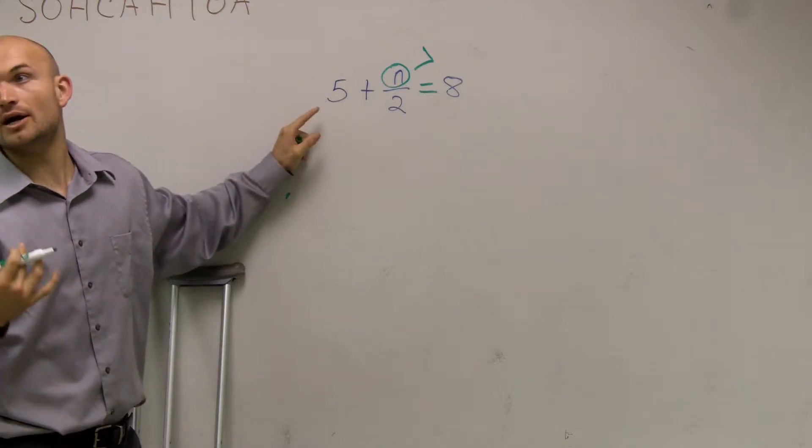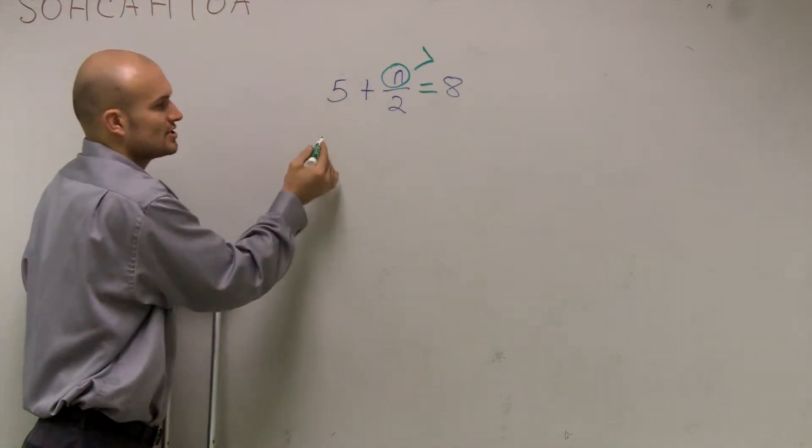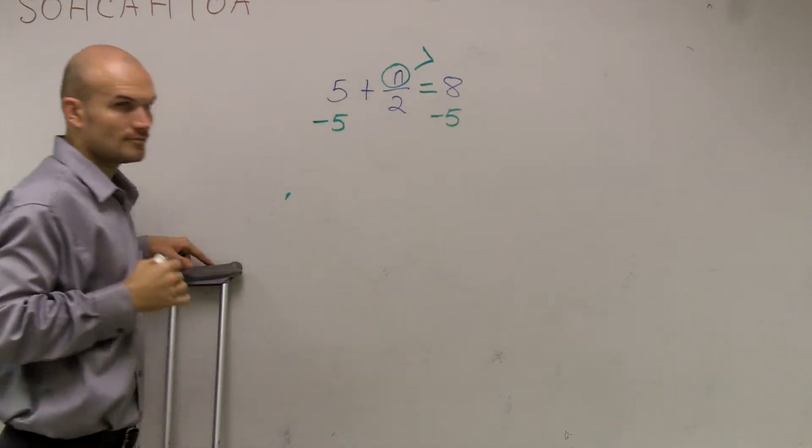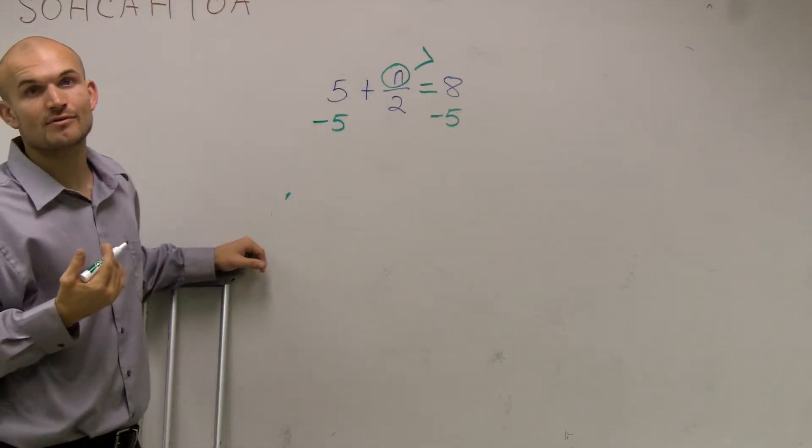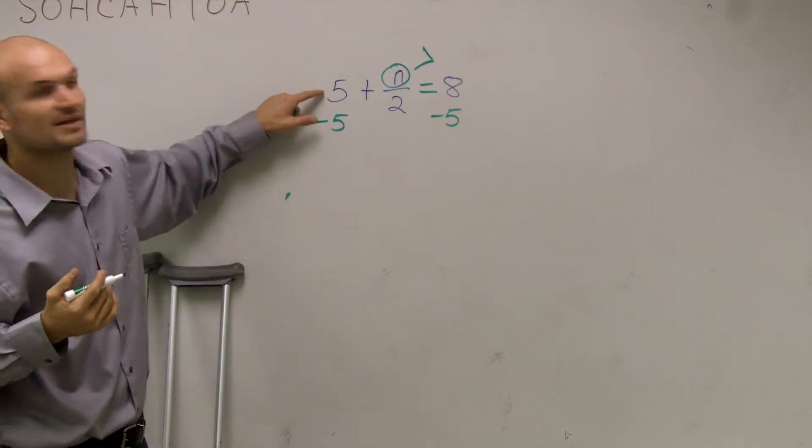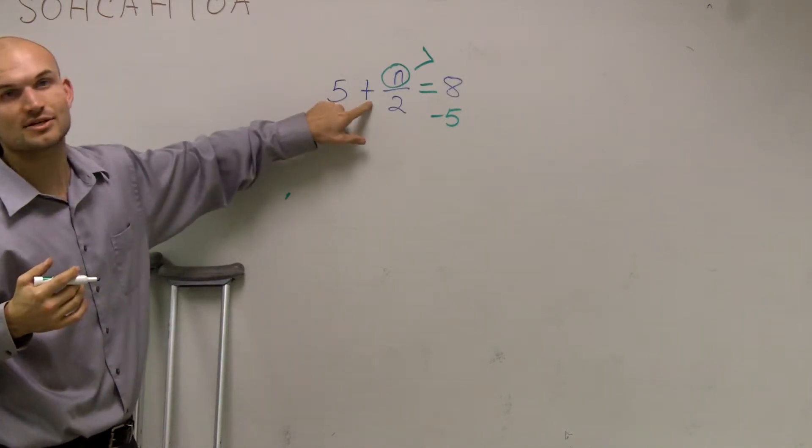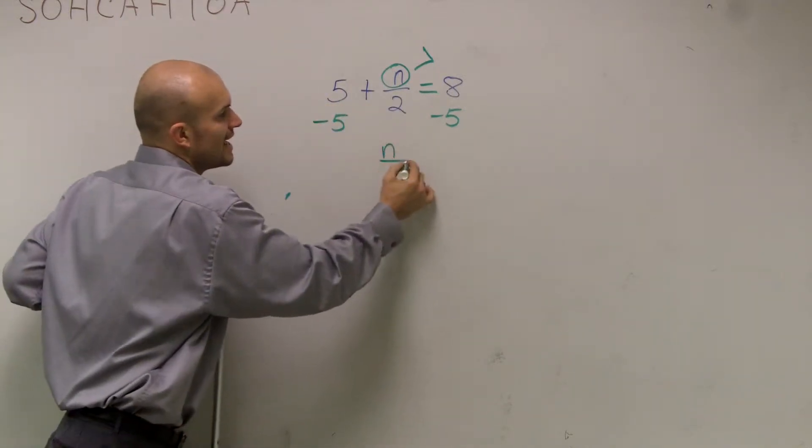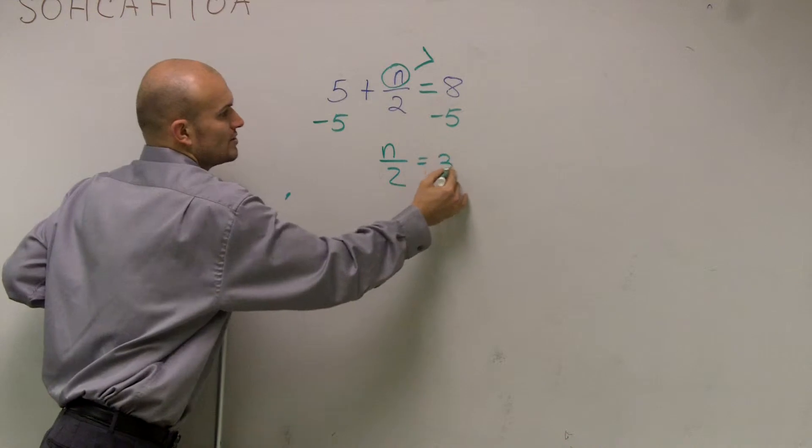So remember, we always undo addition and subtraction first. So to undo addition of 5, I need to subtract 5. Alright, just a little side note. Remember, this is addition of 5 because this 5 is positive, not because there's this plus sign here. Alright, so I subtract on both sides. I get n over 2 equals 3.